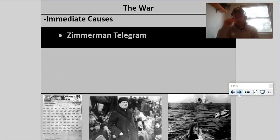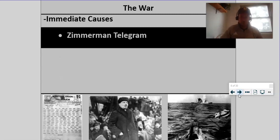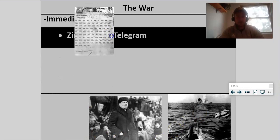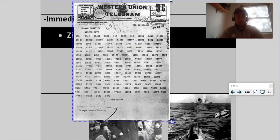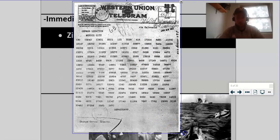There are a few other immediate causes. One of them is the Zimmerman telegram. This is a telegram to Mexico from Germany that gets intercepted by British intelligence on March 1st of 1917. Here's the actual telegram itself. It's in some code. The British broke the code — pretty cool to be able to look at that we actually have this.